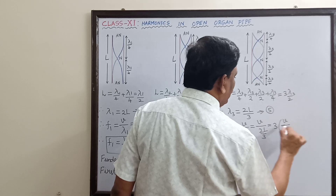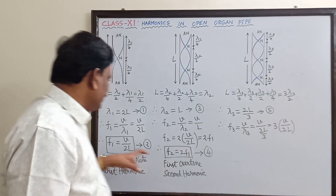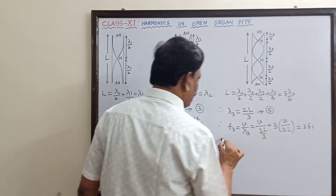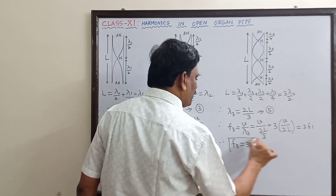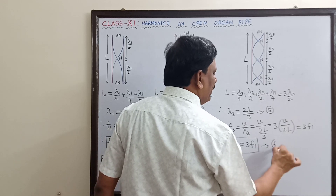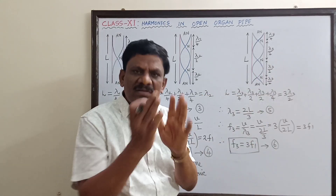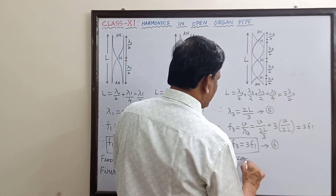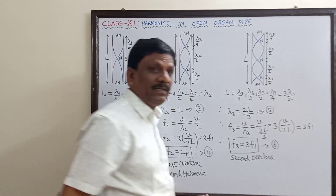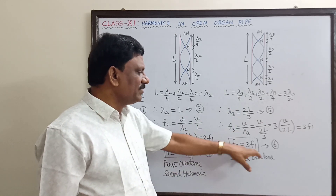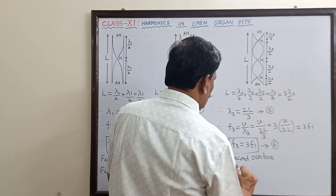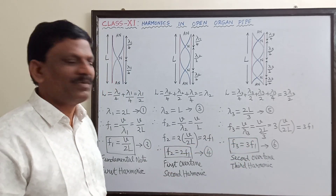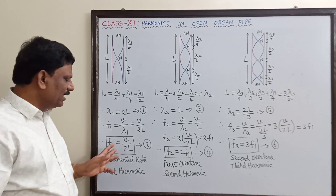The frequency f₃ = v / λ₃ = 3v / 2L = 3f₁. Therefore f₃ = 3f₁, which is equation 6. This is the second possible repetition of the fundamental, so it is called the second overtone. Since it is three times the fundamental frequency, it is also called the third harmonic.